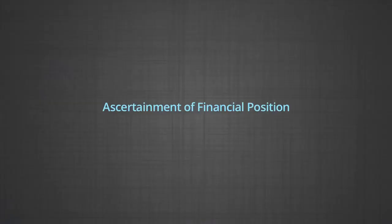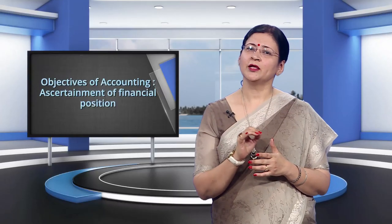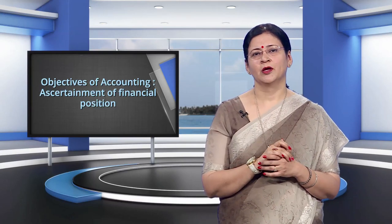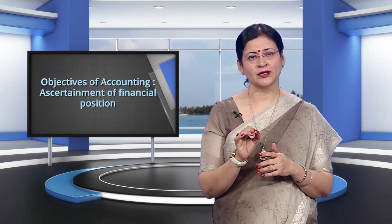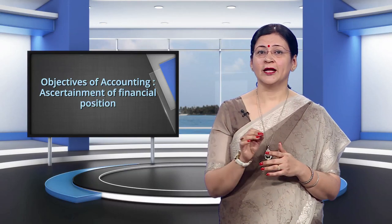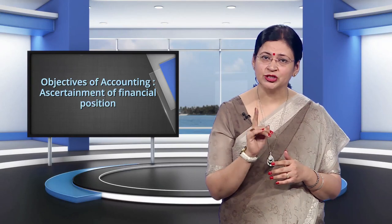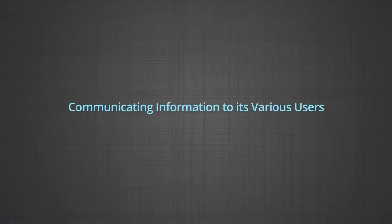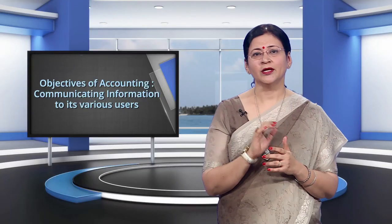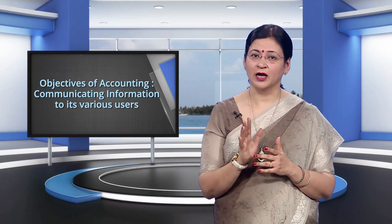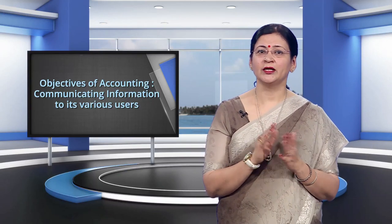The third objective of accounting is ascertainment of financial position. Accounting aims at ascertaining the financial position of the business concern in the form of its assets and liabilities at the end of every accounting period. A proper record of resources owned by the organization (assets) and claims against such resources (liabilities) facilitates the preparation of a statement known as the balance sheet, also known as a position statement. The fourth objective of accounting is communication of accounting information to its various users. The accounting information generated is communicated in the form of reports, analysis, statements, graphs and charts to the users who need it in different business situations.